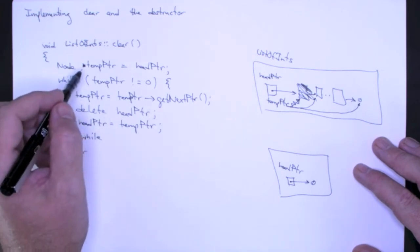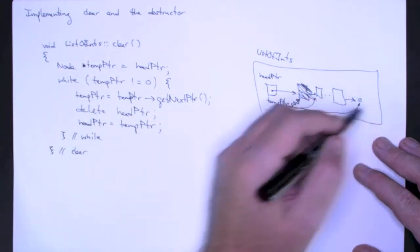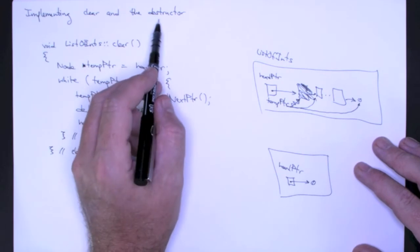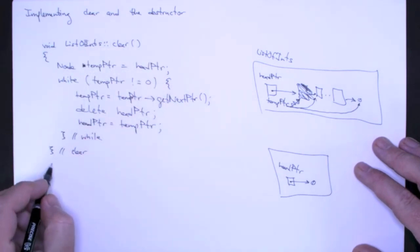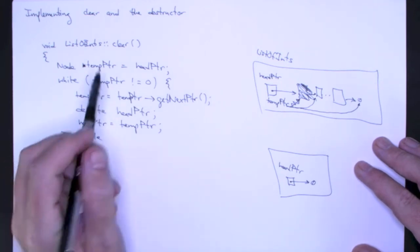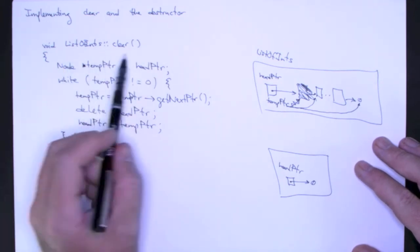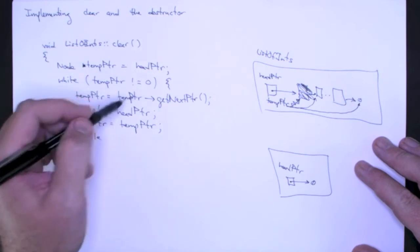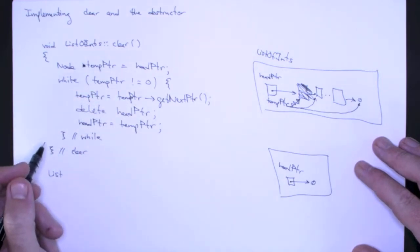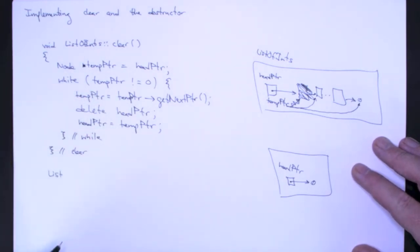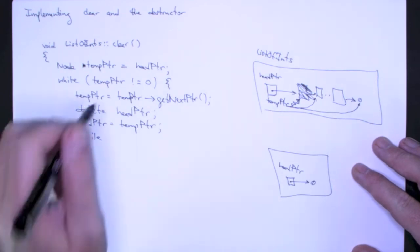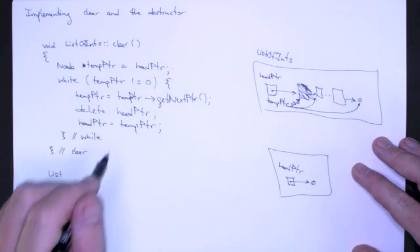So now that I have implemented a method that removes all the elements of the list, now I can turn my attention to the destructor. The destructor is going to do exactly the same thing. In fact if we weren't implementing a clear method we would just put all of this code in the destructor itself but we don't want to duplicate code of course. Since I've implemented a clear method I can just have the destructor call it.